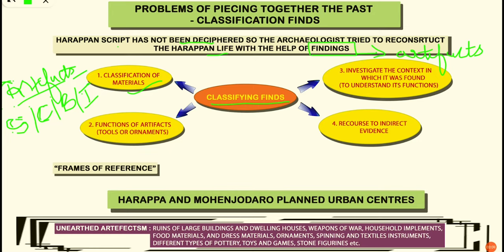Next, archaeologists try to understand the functions of artifacts — whether an artifact is a tool used by the people or an ornament worn by them. Third, archaeologists investigate the context in which the artifact was found to understand its function. For example, if an artifact is found in a drain, the archaeologist can determine that the artifact was used for cleaning the drain.